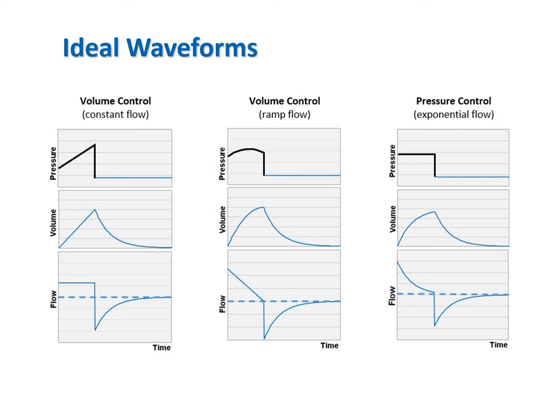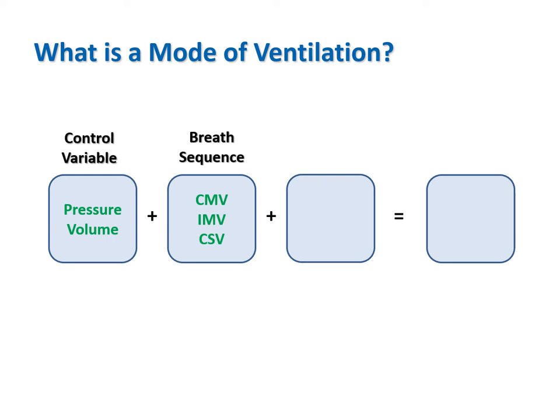Volume control means the ventilator controls the right-hand side of the equation—both tidal volume and peak inspiratory flow are preset, and changes in elastance and resistance cause changes in pressure. For volume control, the flow waveform is preset, usually as a square or descending ramp shape. In pressure control, if the pressure waveform is preset, it is usually a square. If PVENT is proportional to PMUS, the pressure waveform can have a wide variety of random shapes.